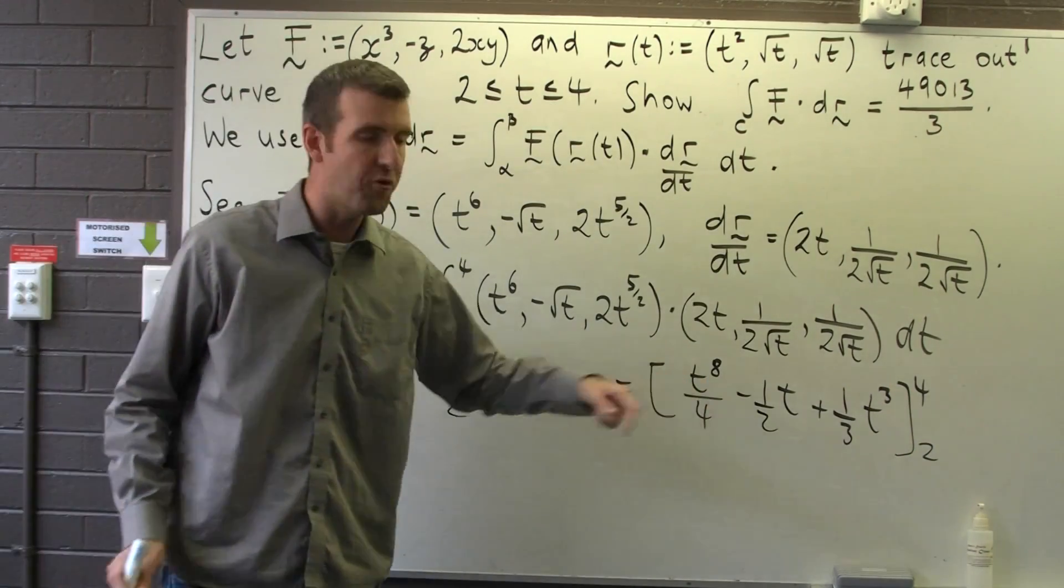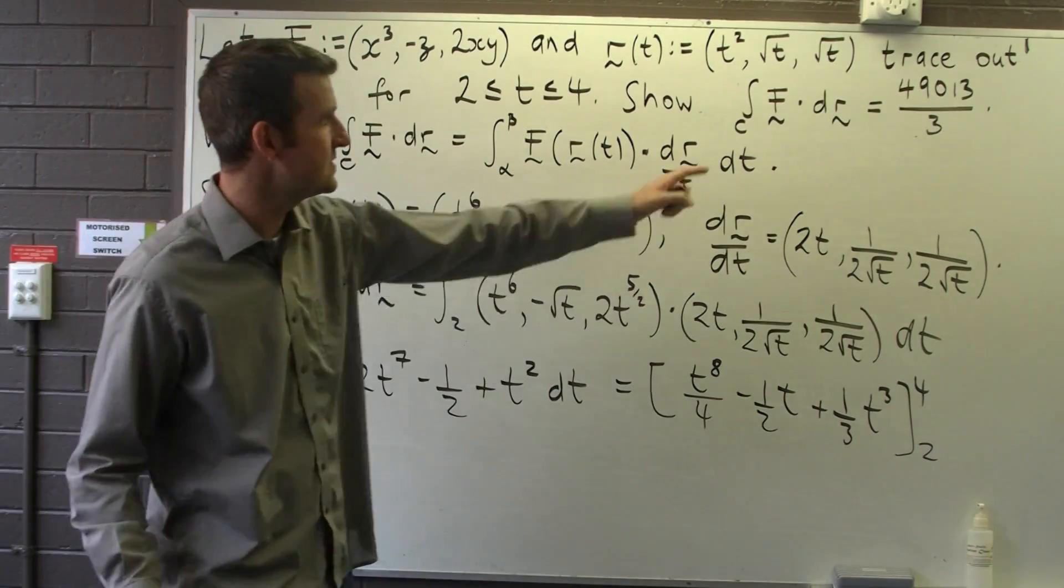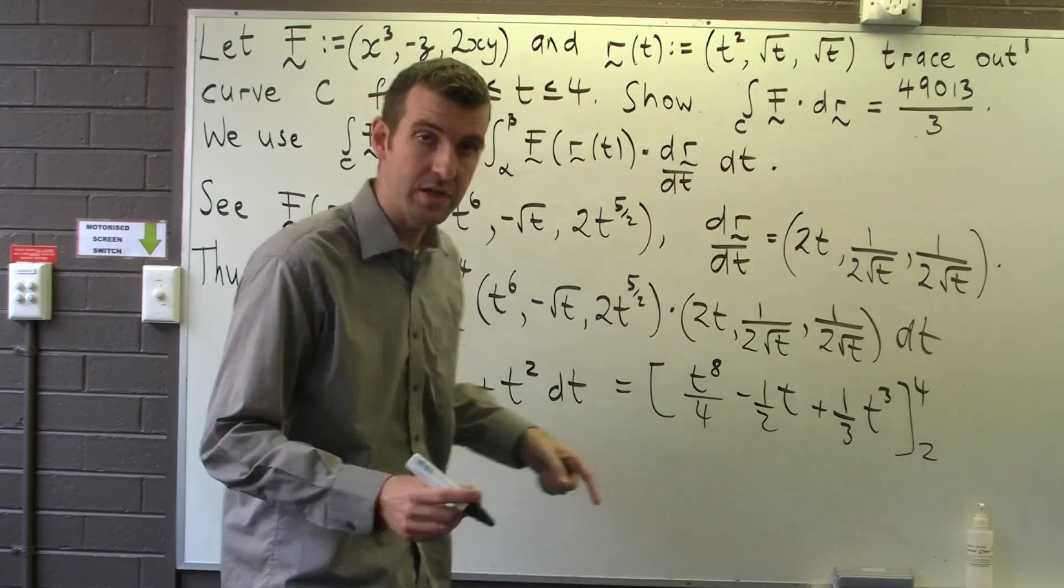Now substituting t equals 4 and t equals 2 into this, we're going to get some large numbers. You should check the calculations, but when you do that you should get this number.